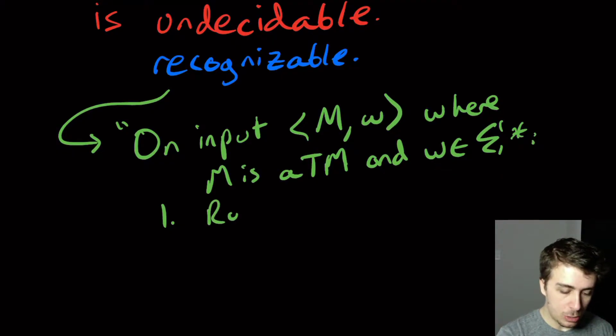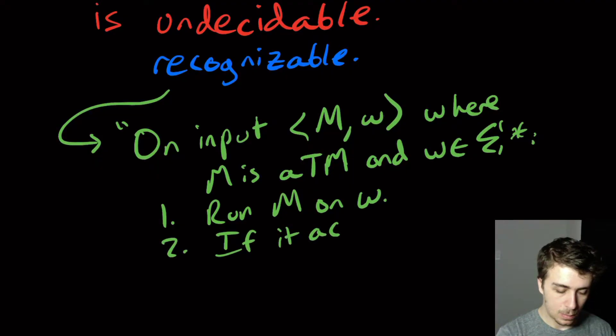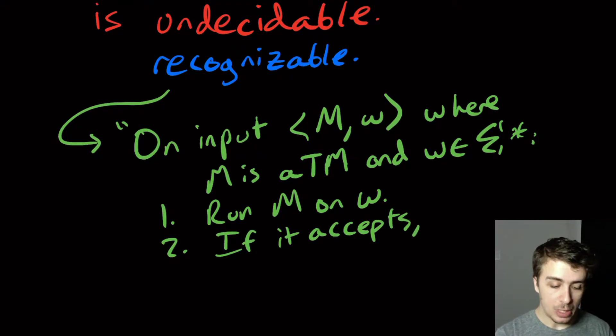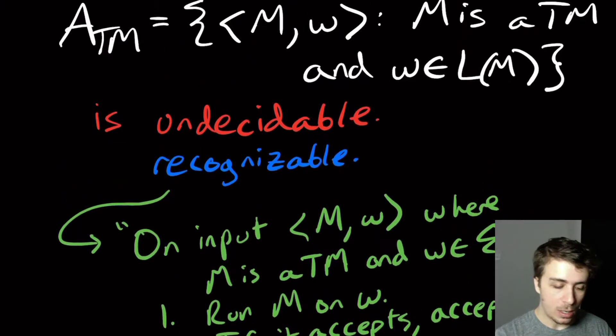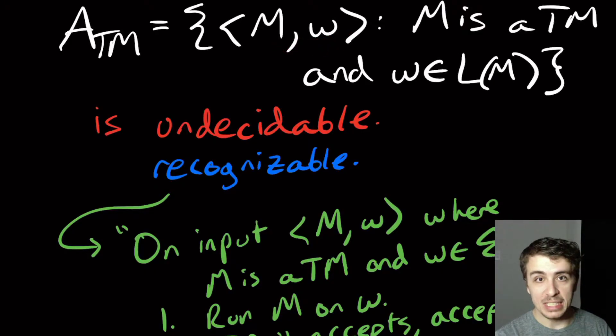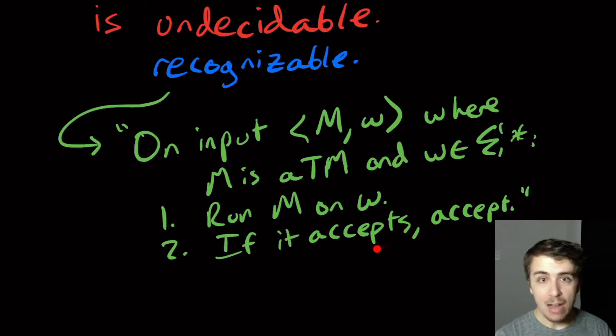And what we're going to do is just run that machine on the input W. And then if it accepts, if the Turing machine M accepts W, then we are going to accept. So we will say yes, this machine did say yes on input W. And so if the Turing machine M and W pair is really in here, that M really does accept W, well, we're going to find out that truth at some finite amount of time.